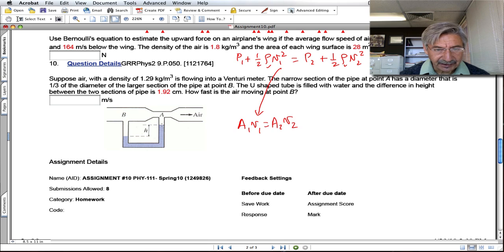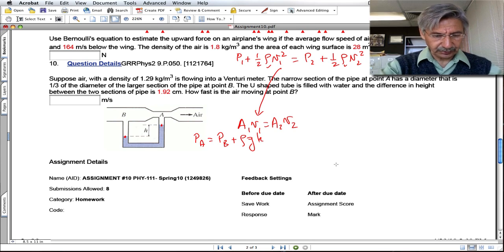The relation between the velocities you get from the relation between the areas. In this particular case, you know the pressures because the pressure at A is equal to the pressure at B plus ρgh. So that will do it. Thank you very much.